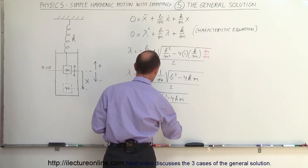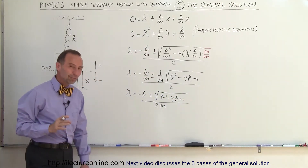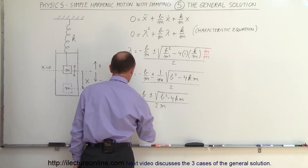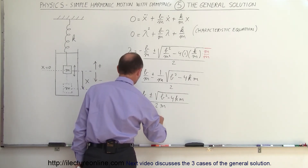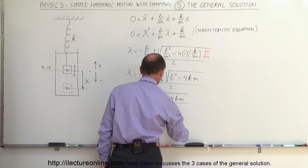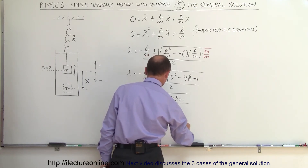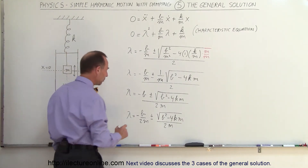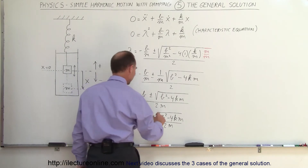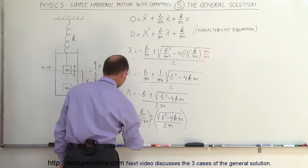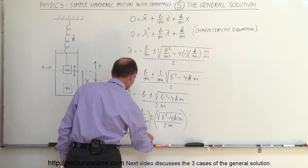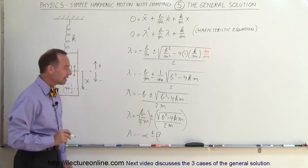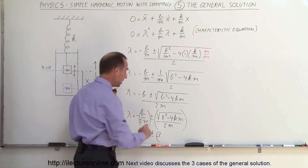Now we can move the m to the denominator, so we have lambda is equal to minus b plus or minus the square root of b squared minus 4km, all divided by 2m. To write it in a slightly better format, we can then say that lambda is equal to minus b over 2m, plus or minus the square root of b squared minus 4km, all divided by 2m. If we replace these quantities with substitution variables, we can say that lambda is equal to minus alpha plus or minus beta.